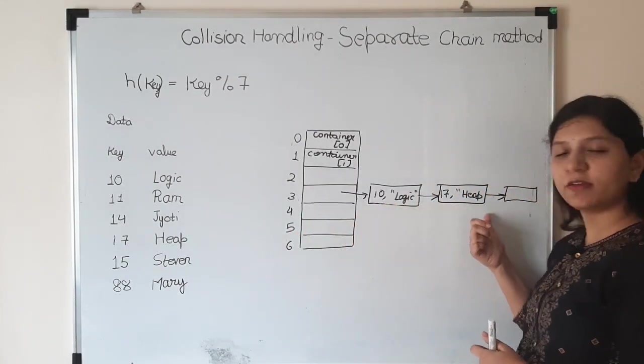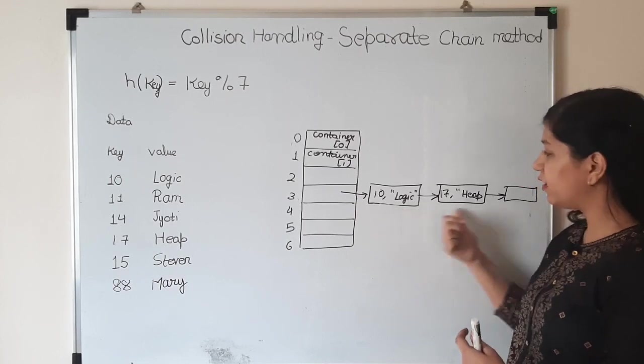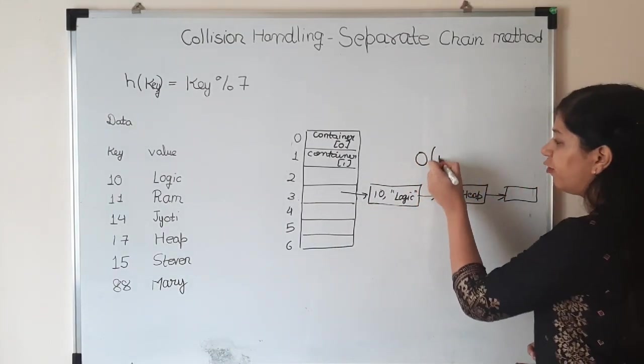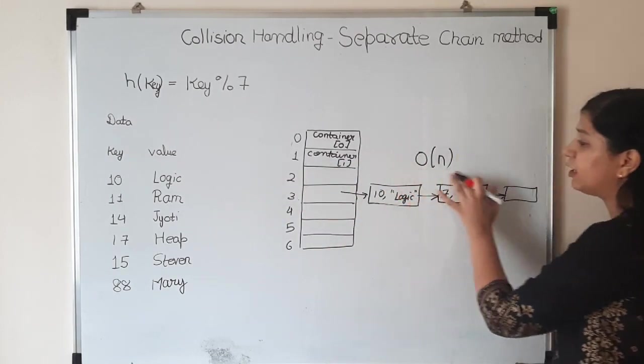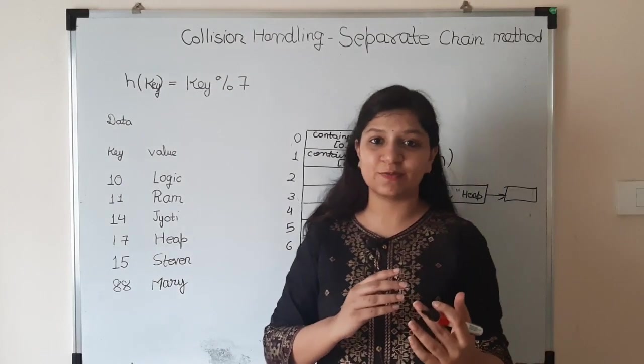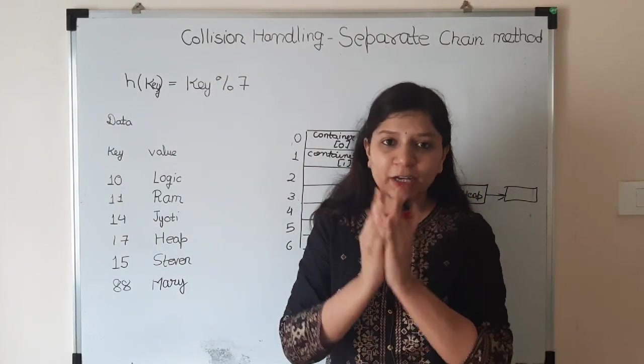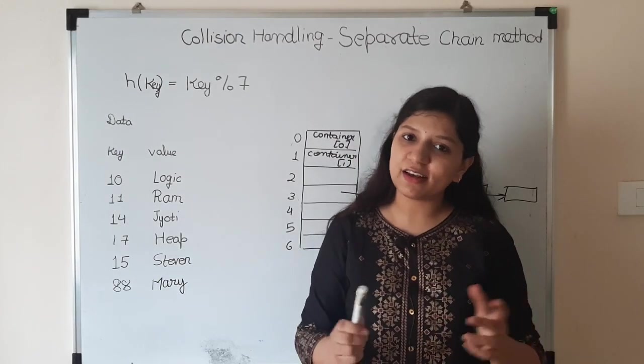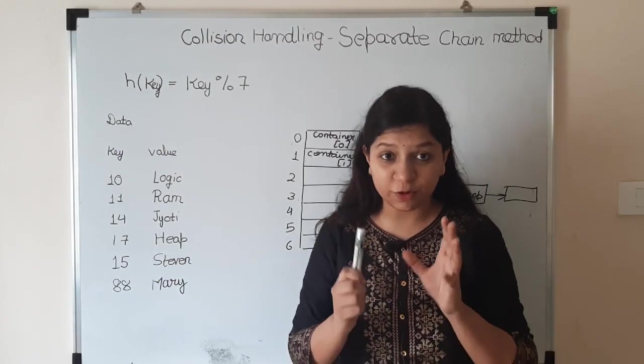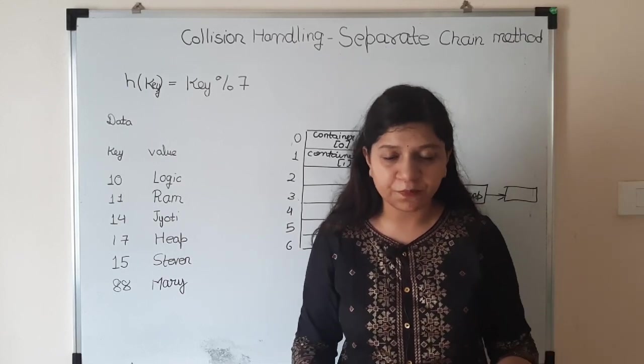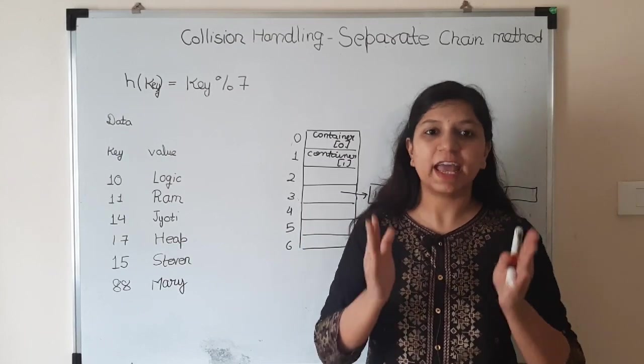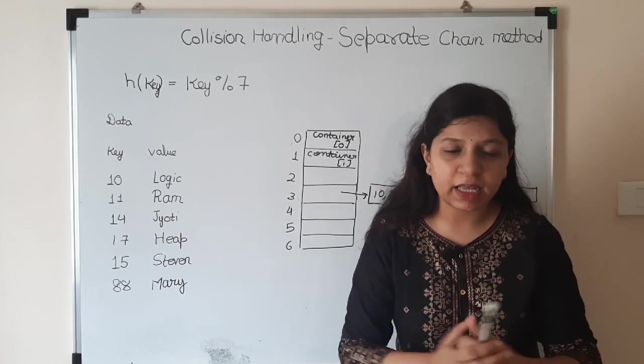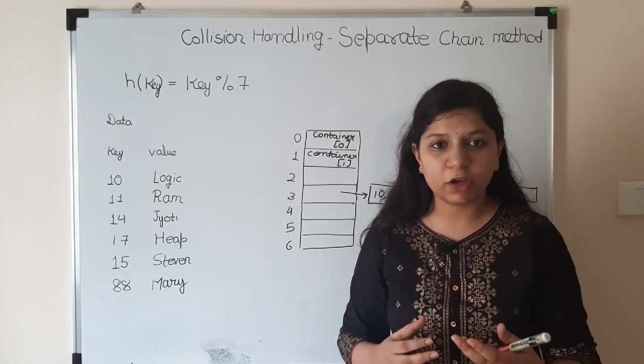This list should not be very long. Suppose if this list becomes the size of the input, then the search will become order of n. If your hash function is not good and maps all values to one particular index, then the search will become really bad. That's why I was saying your hash function must be really good so it distributes the data uniformly. This is Separate Chain method where every index is considered a bucket or container implemented using a list.